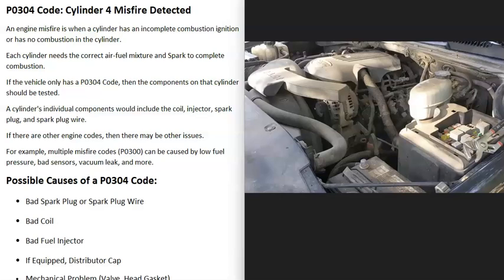But if you're getting multiple misfire codes, that can point to something else. For example, if you had a P0300 code and were also getting a P0301, P0302, along with this P0304 code, that would point to something affecting the whole engine — something like a weak fuel pump, a clogged fuel filter, or a coil pack. But if you're only getting this P0304 code, you only need to check the components on cylinder number four.